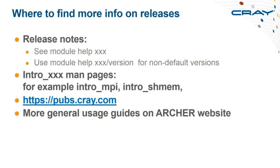Information for this talk was collected from release notes and from Cray developers. To see release notes yourself, type 'module help' on a module or specific version — it gives the release notes and points to the relevant file on the system. Documentation is also available at pubs.cray.com. For large packages, intro man pages are very useful — especially for performance tools and MPI, which has a huge number of environment variables controlling behavior. More general Archer usage information is on the Archer website.